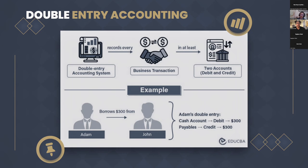Here's a simple example: Adam borrows $300 from John. Adam's cash account, which is an asset, is debited by $300 — the debit reflects an increase in cash. At the same time, because he's borrowed that money, his liability is credited by $300, reflecting Adam's obligation to pay John back. This is a very simple demonstration of how double entry accounting captures both sides of the transaction.